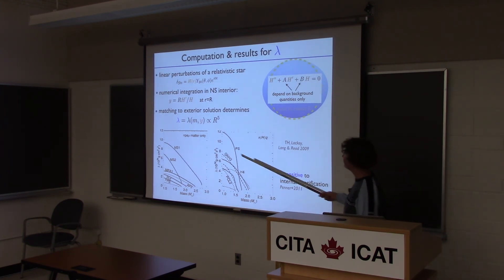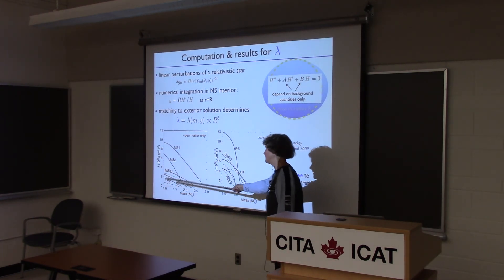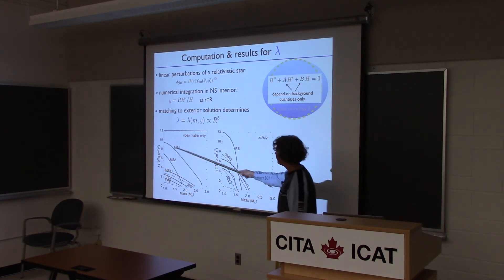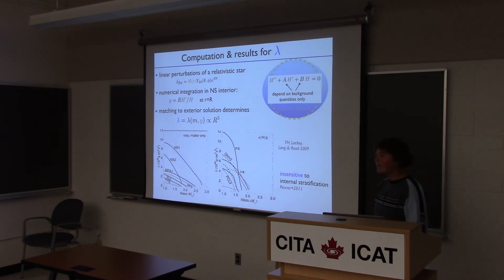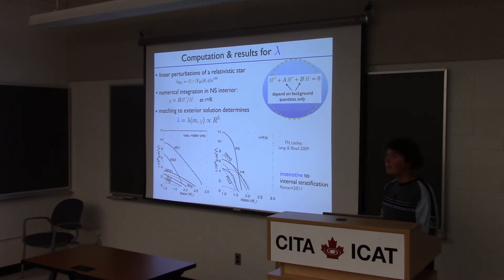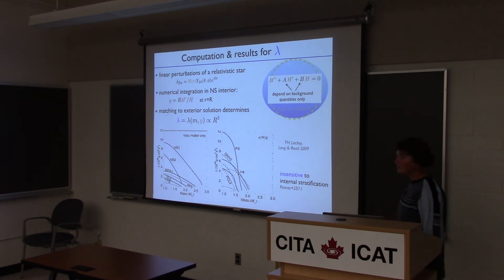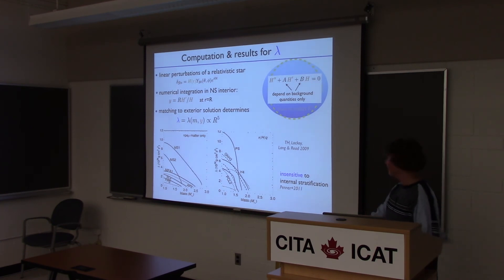To show a few results for how this looks: here you see the parameter in some units as a function of mass, and these curves are all different equations of state. You can see it spans quite a range of values. The hope is that gravitational wave measurements will constrain these values or even measure them. This tidal parameter, somewhat unfortunately but it makes sense, is not sensitive to any details of the interior composition — it's more the global distribution of mass that it is sensitive to.